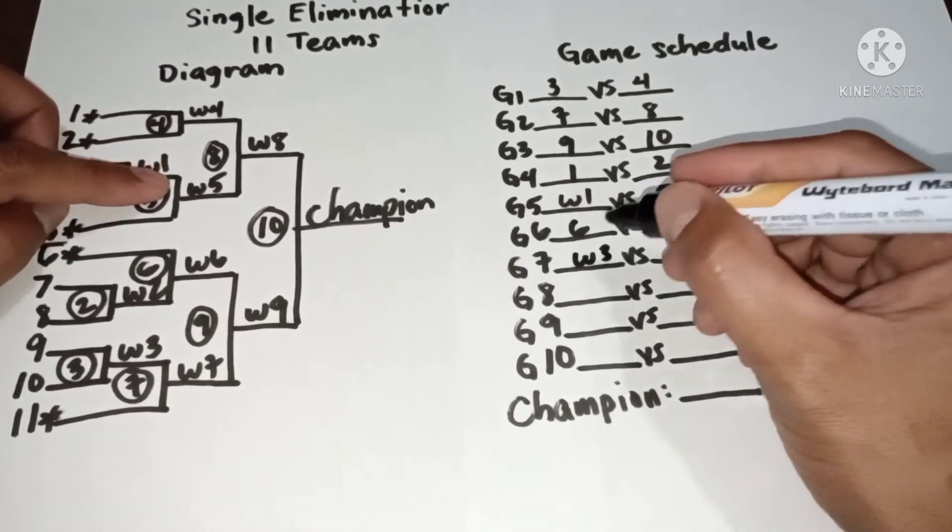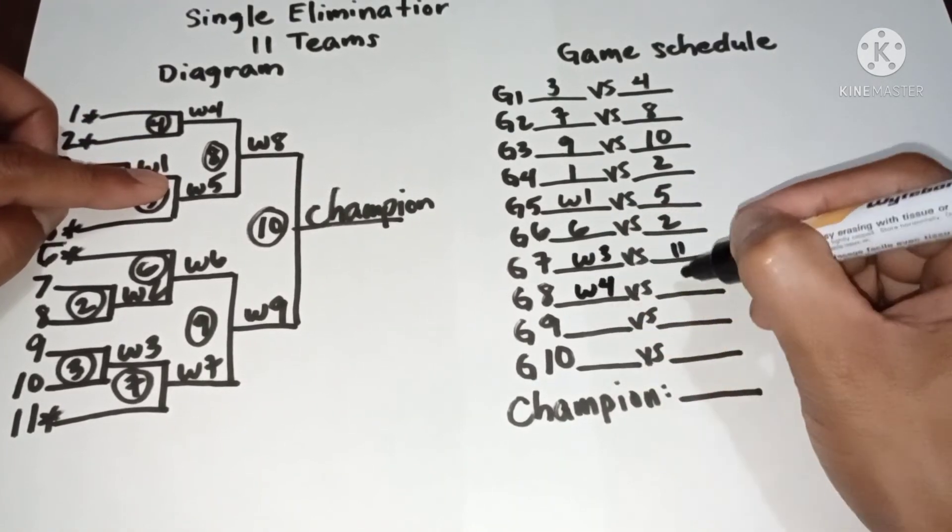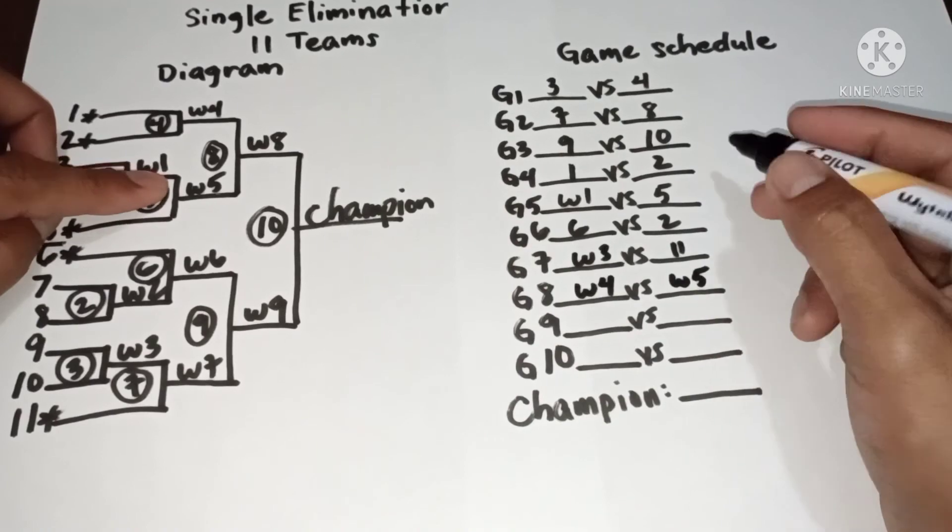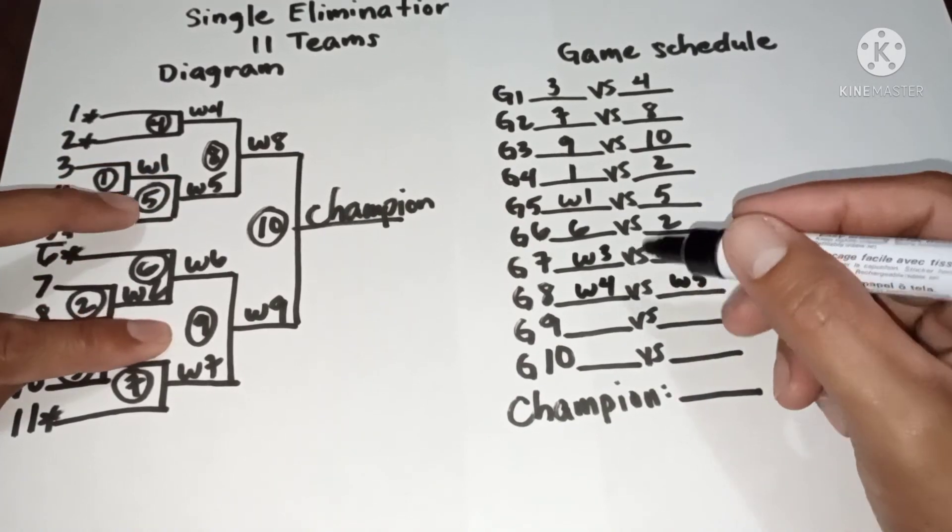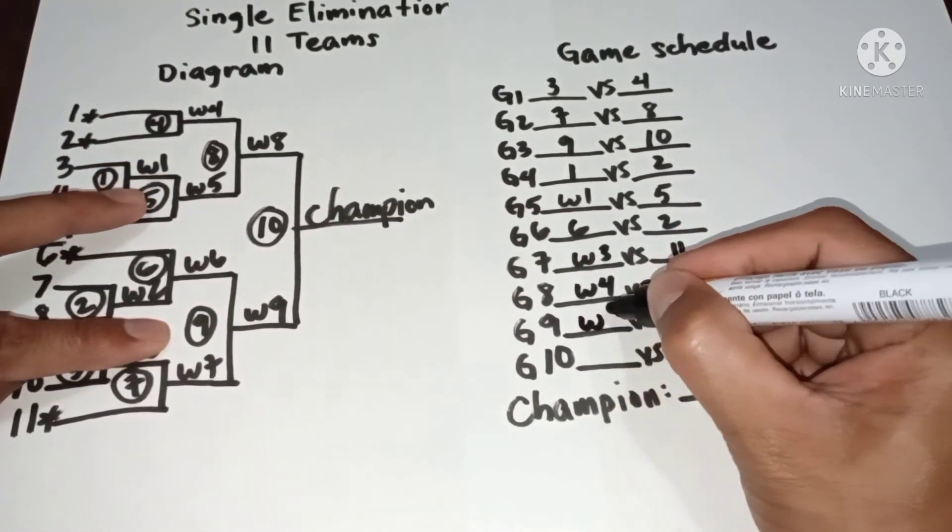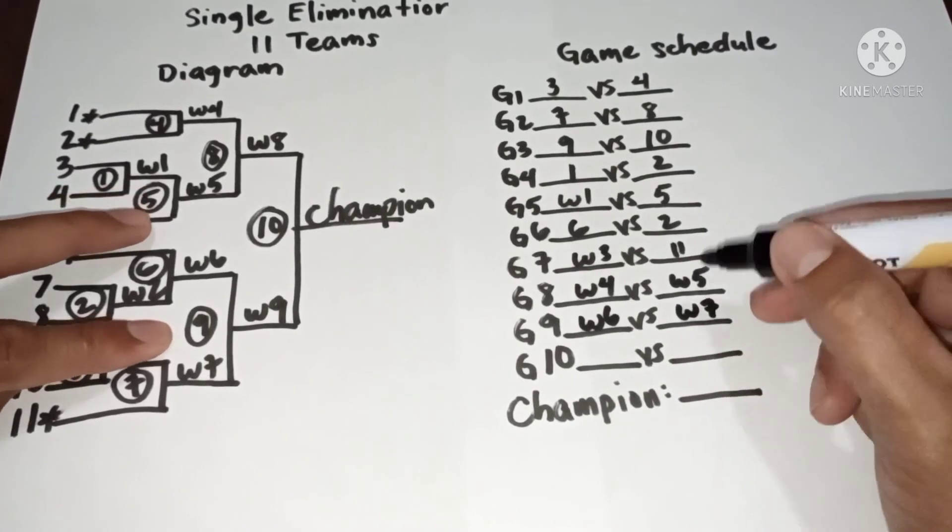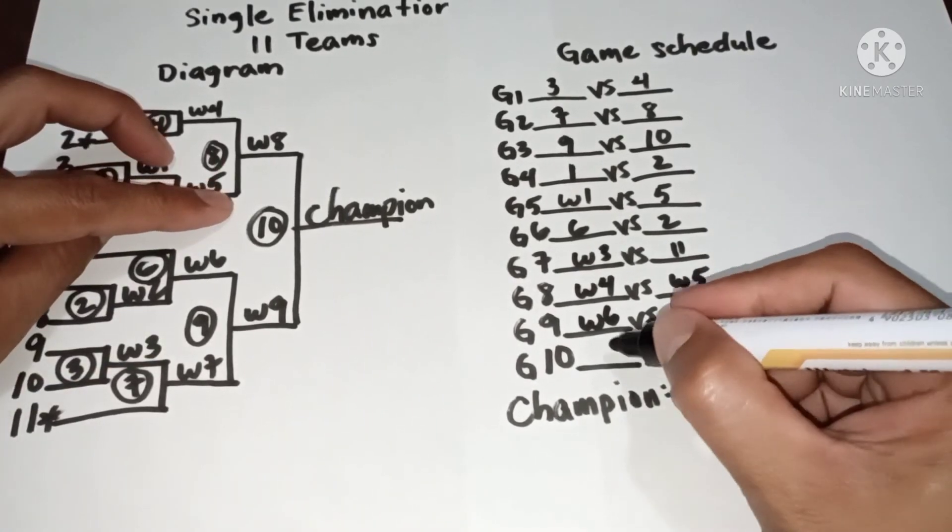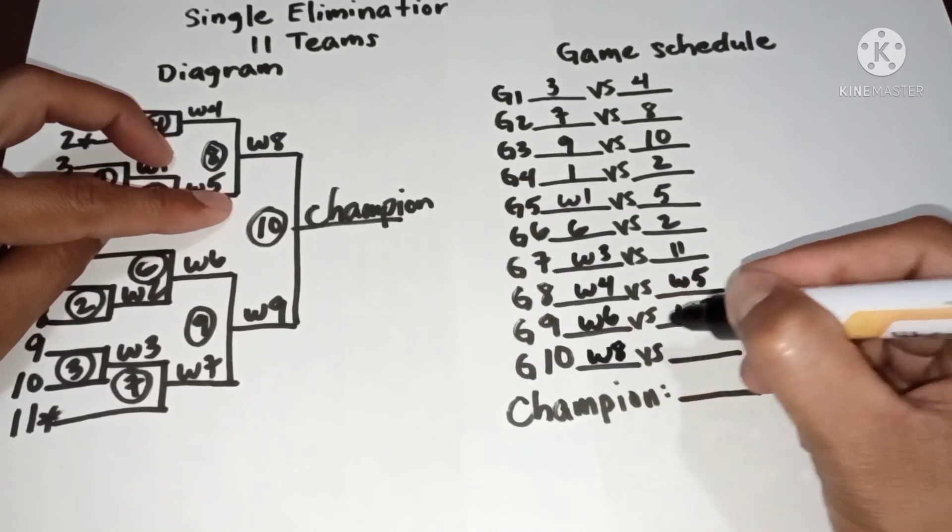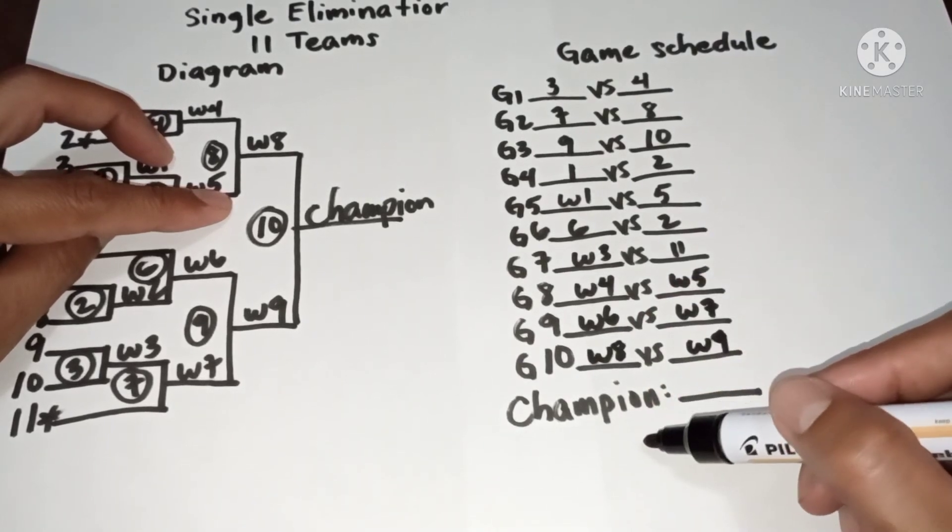In game 8, we have winner 4 versus winner 5. In game 9, we have winner 6 versus winner 7. In game 10, we have winner 8 versus winner 9, and then champion.